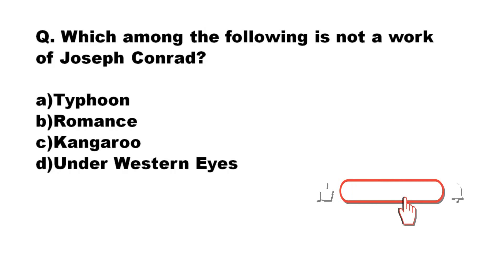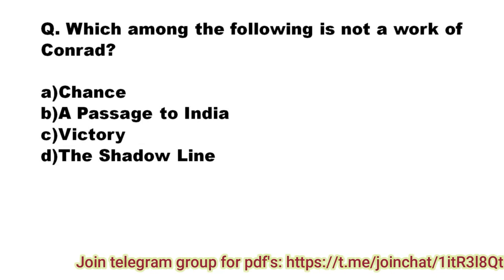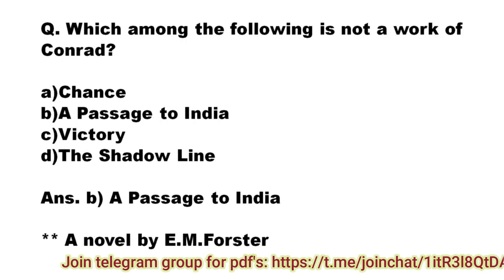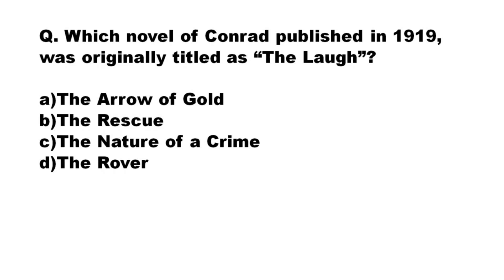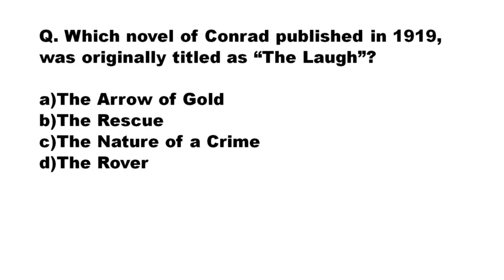Our next question: which among the following is NOT a work of Joseph Conrad? The options are Typhoon, Romance, Kangaroo, Under Western Eyes. The correct answer is option C: Kangaroo — it is a novel written by D.H. Lawrence. Our next question: which among the following is NOT a work of Conrad? The options are Chance, A Passage to India, Victory, The Shadow-Line. The correct answer is option B: A Passage to India — it is a novel by E.M. Forster. Finally: which novel of Conrad published in 1919 was originally titled 'The Love'? The correct answer is The Arrow of Gold.